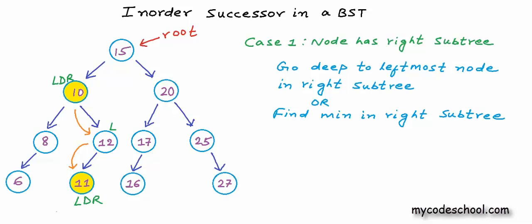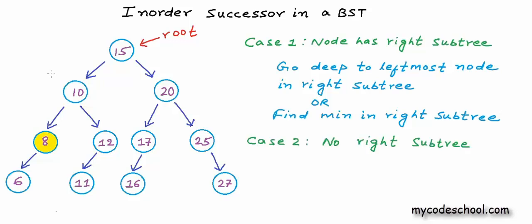What would be the successor if there is no right subtree? What node would we visit after node with value 8? This node does not have a right subtree. If we have already visited this node, we have visited its left and the node itself, and there is nothing in right. We need to go to the parent. If we are going to the parent from left — which is the case here — then the parent is unvisited, because we are coming back after its left subtree is done. So for node 10, we just finished its left subtree and now we can visit it. So 10 is the successor of 8.